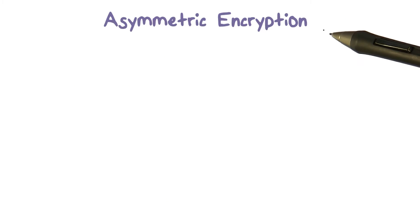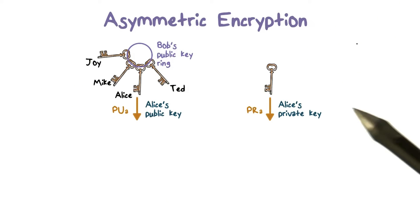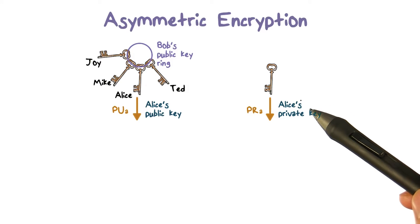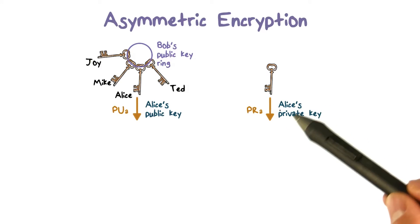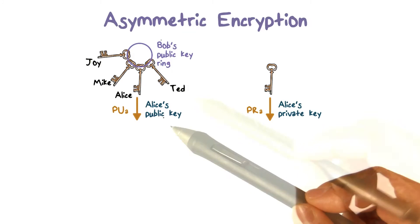Let's look at the essential steps in asymmetric encryption. First, each user generates a pair of keys that are paired together mathematically. One is the private key and the other is the public key.